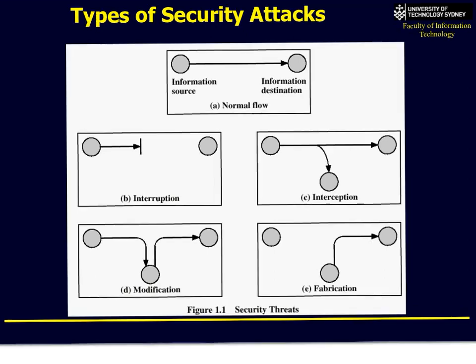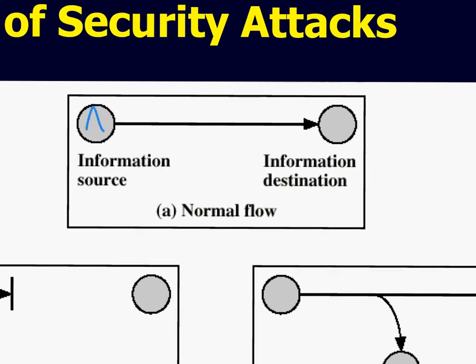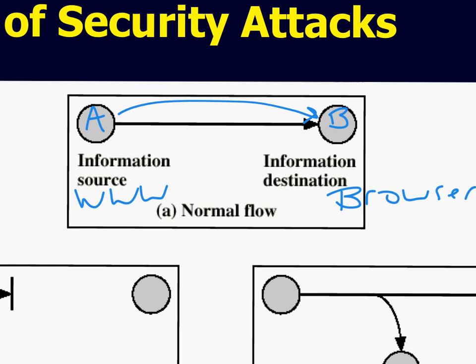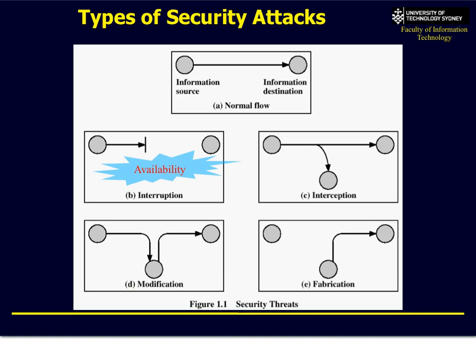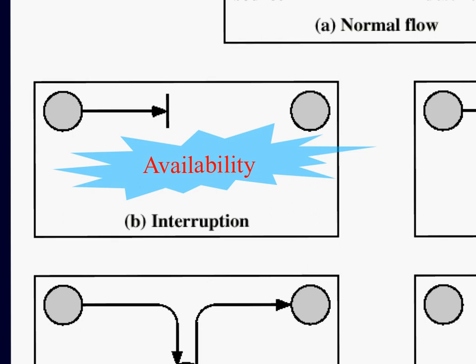In a normal situation, we're only interested in getting information from point A to point B — for example, from a web server to a browser. But what if that changes? If I send information from the web and it can't get through — that's an interruption. That's called an availability attack.